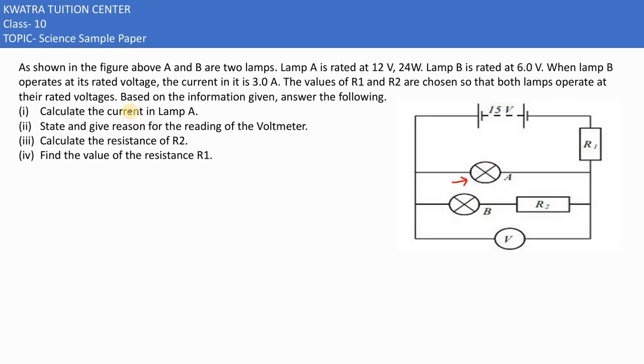These are our two lamps. They are saying lamp A is rated as 12 volt and 24 watt. We have V also, P also. Lamp B is rated at 6 volt. What does this mean?